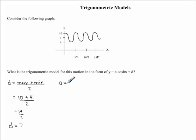In order to solve for a, we need to take the maximum y value and subtract the minimum y value. And again, we are going to divide by 2. We already determined our maximum y value was 10. And our minimum y value was 4. 10 minus 4 will give us 6. 6 divided by 2 is equal to 3.